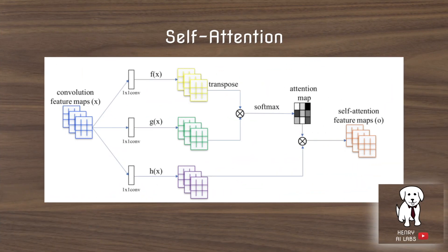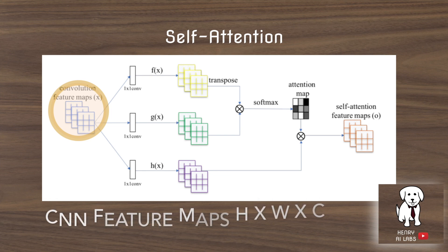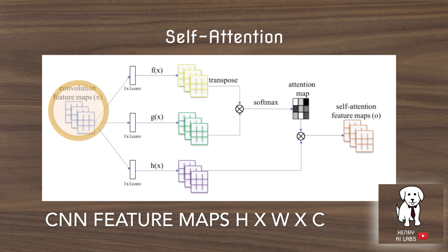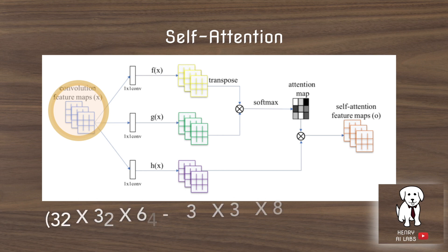This is the overview picture of self-attention. You start with the convolution feature maps from the previous layer — a convolutional layer that convolves over an image or a set of feature maps and outputs features of dimension height by width by channels. The idea of these 1x1 convolutions is to reduce the dimensionality of the channels dimension of the convolution feature maps.